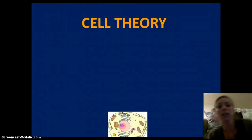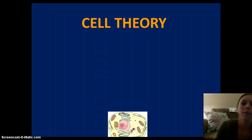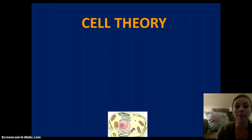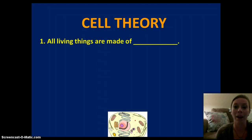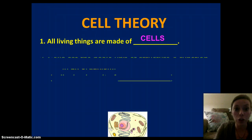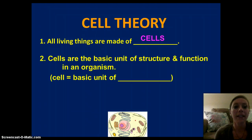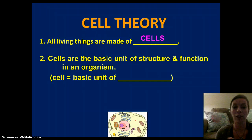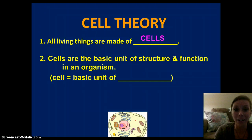So, the three parts of the cell theory. First, we have that all living things are made of cells. Two, cells are the basic unit of structure and function in an organism. Therefore, they are the basic unit of life.